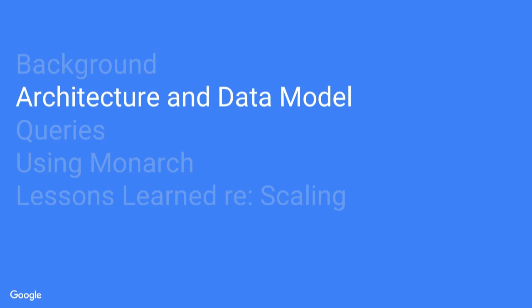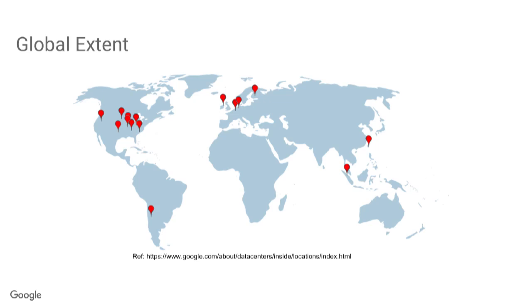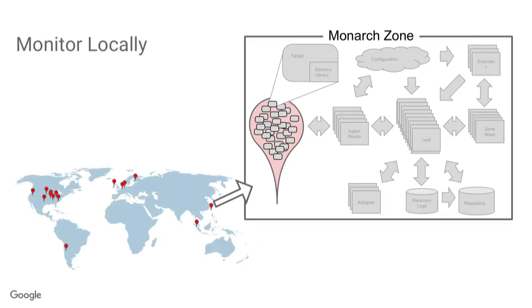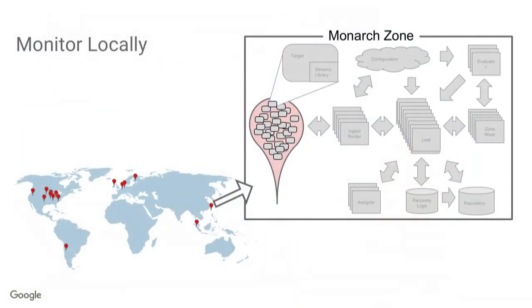For architecture background: Google has data centers all over the globe, and they start locally by breaking the world into zones. A zone is a strongly connected network region — think of a building with compute clusters, or a group of buildings strongly connected in the network sense. They monitor and store locally within the zone, so data is stored near where it's collected. They manage this as a global system, doing queries and alerting globally, but zones can operate autonomously if there's a WAN cut — you can still get an alert in a particular zone. Monarch runs as a monitoring service for the rest of Google; users don't set it up themselves.